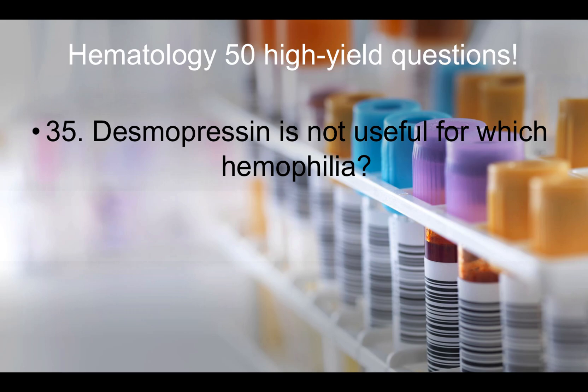Question thirty-five: Desmopressin is not useful for which hemophilia? That would be hemophilia B. In a question stem, they'll tell you this is a factor 9 deficiency — so you know that's hemophilia B — and ask which medication is not useful. Look for desmopressin.